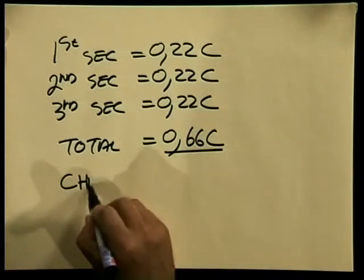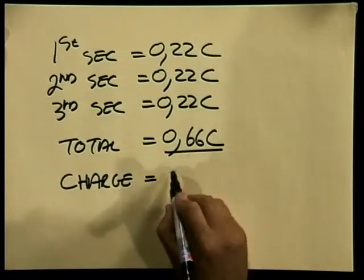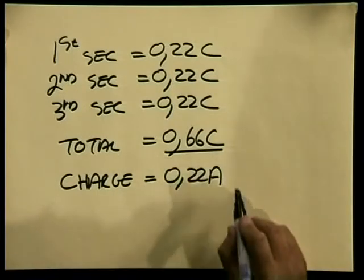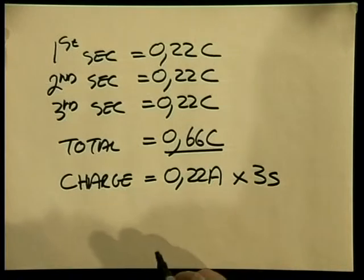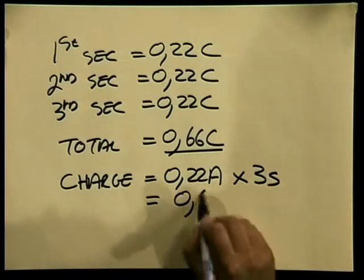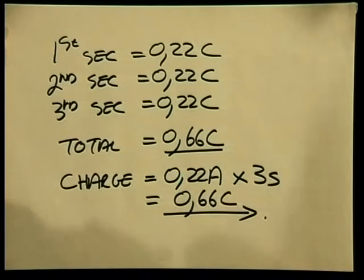Therefore, the amount of charge equals 0.22 amperes — the current — multiplied by the time of three seconds, giving a total of 0.66 coulombs. I would now like to do an investigation to show how we define the rate of flow of charge through a conductor in a mathematical format. Let me set up another circuit.